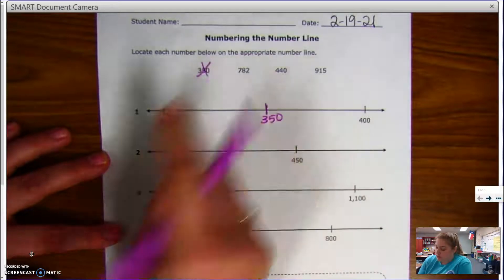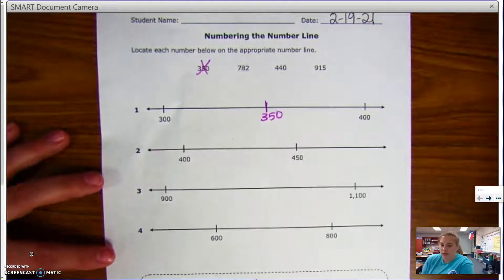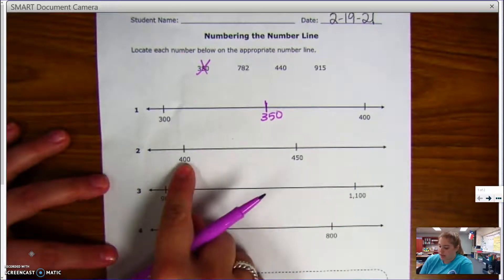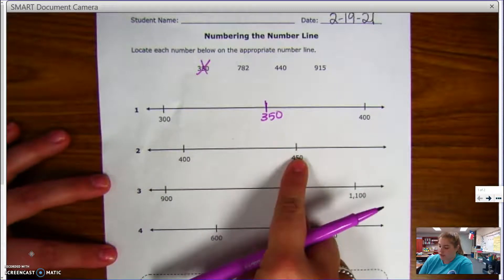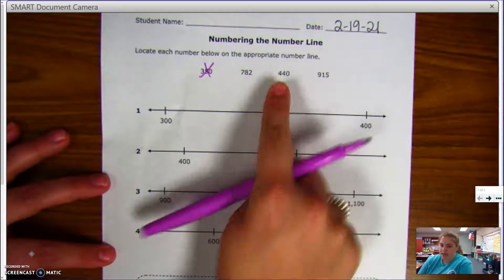So now I'm going to move on to my next number line. I need a number that goes between 400 and 450. I look at my three choices left and I know that 440 is going to go between 400 and 450.